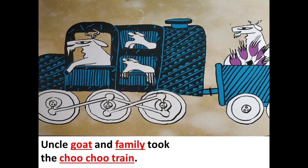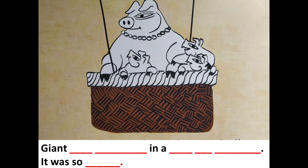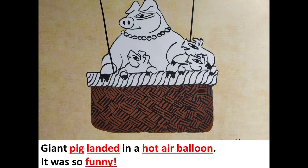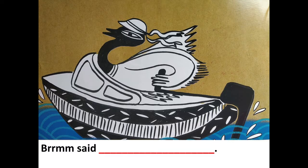'Giant — — — in a — — — it was so —.' Giant pig landed in a hot air balloon. It was so funny. Next: 'The dogs —.' The dogs cycled into the house. 'Broom says —.' Broom said duck's motorboat. See children, the answers are coming up in red.